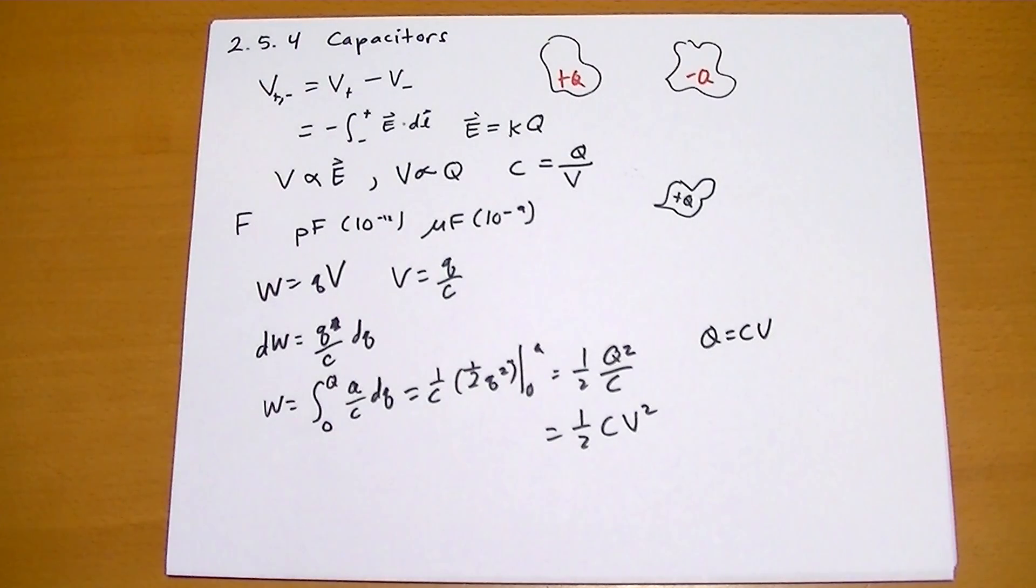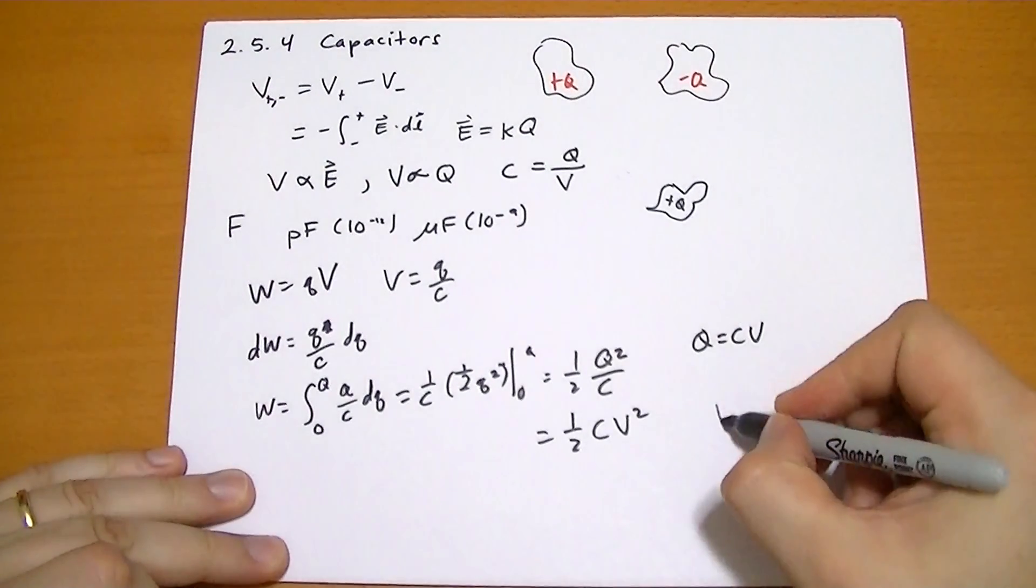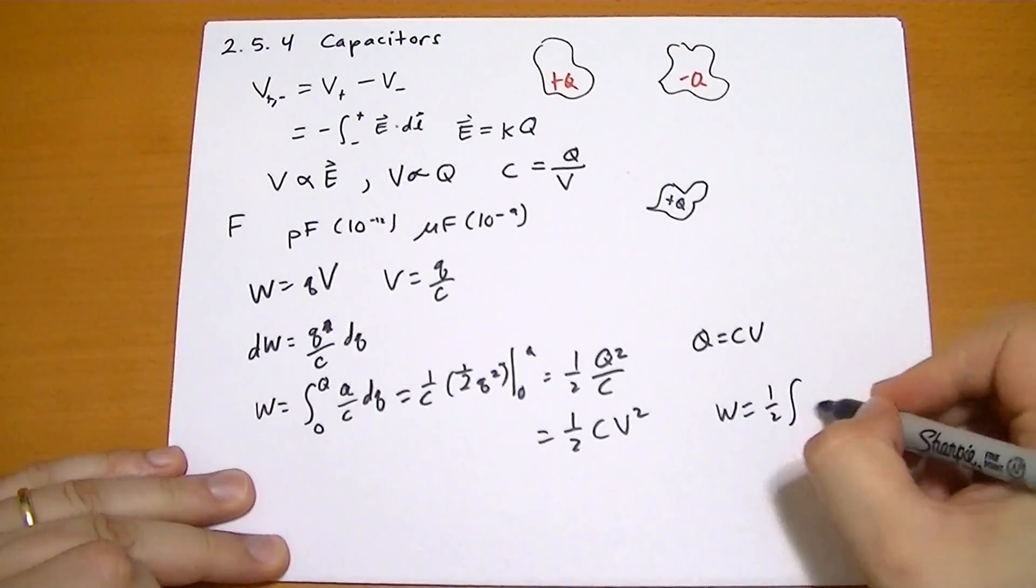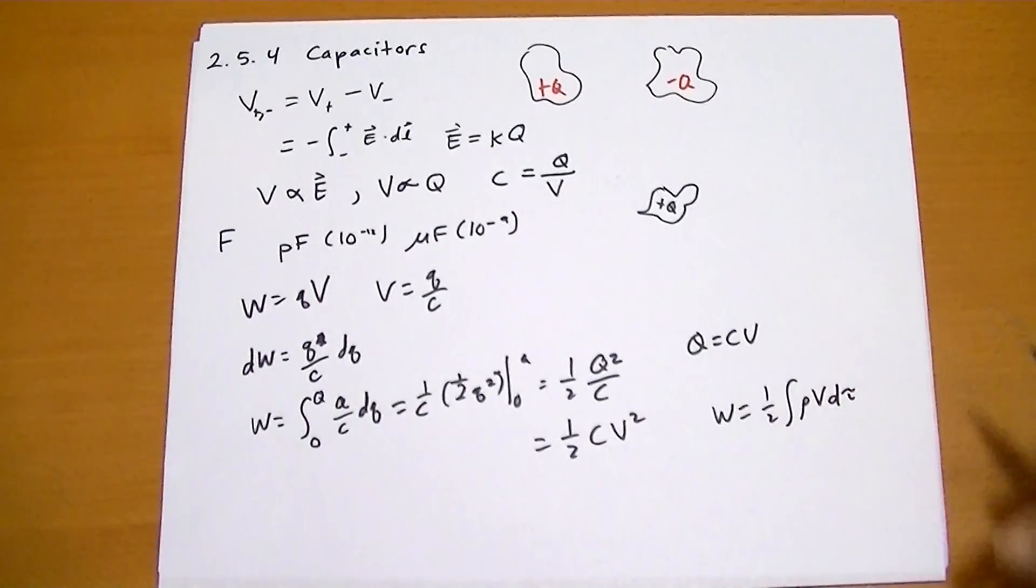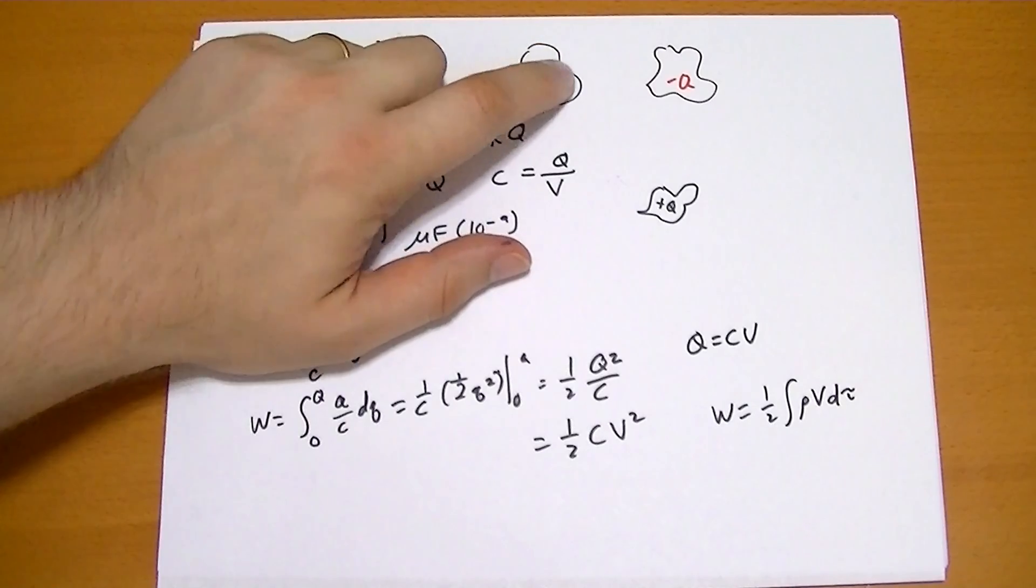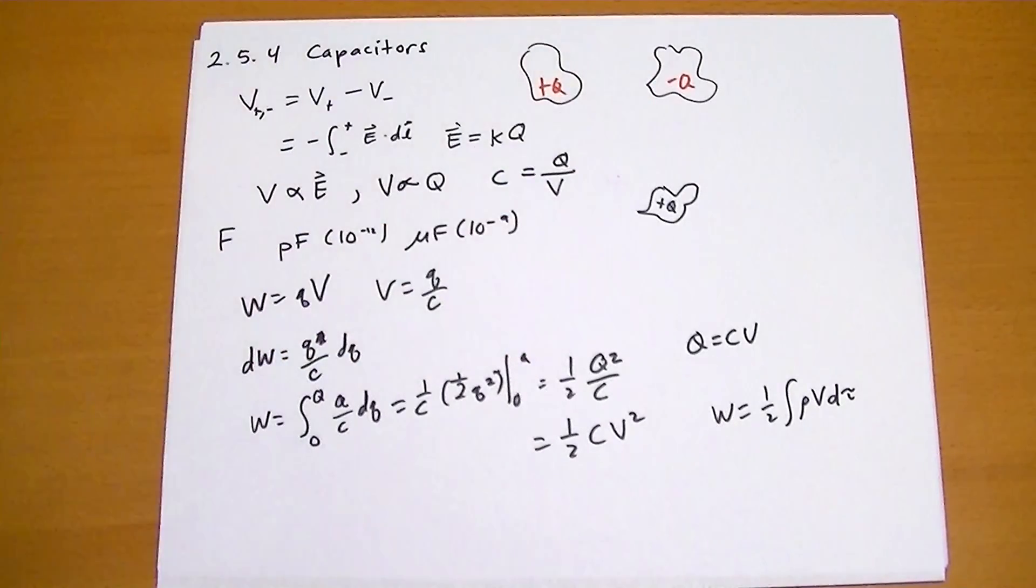The one that's most interesting is this one that says the work is one half the integral of rho, the charge, times the potential times d tau. So just not even thinking about building up the charge, it's saying it currently has a positive charge. And just go over each spot, and of course, inside it's zero and there's a surface, anyway, you can figure it out.